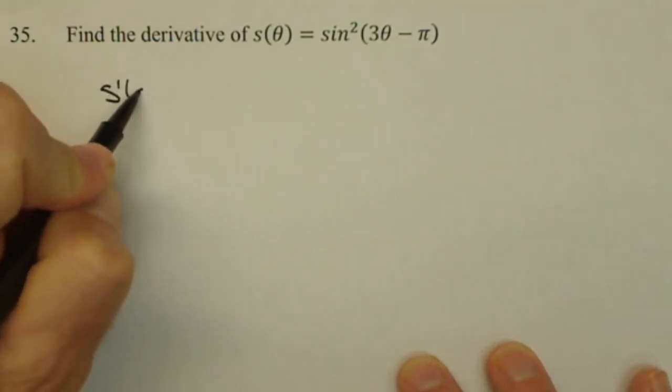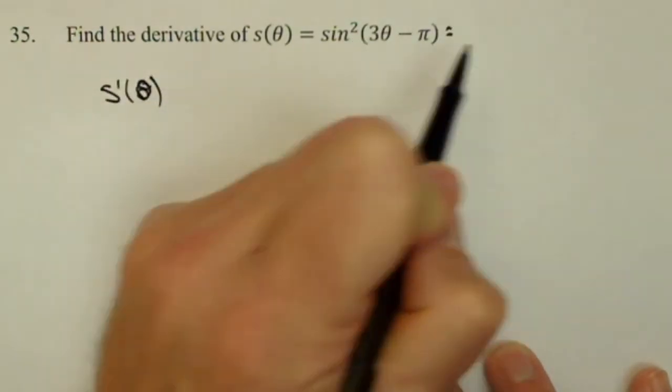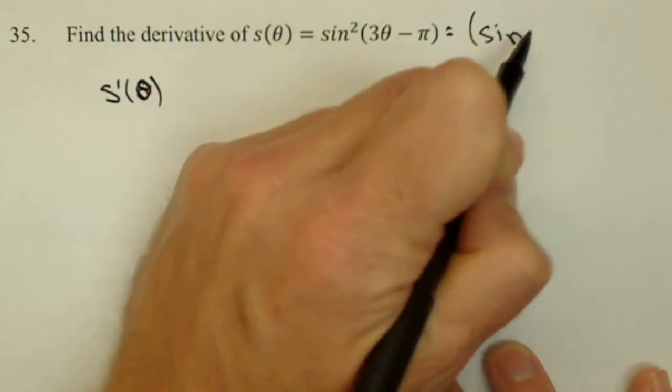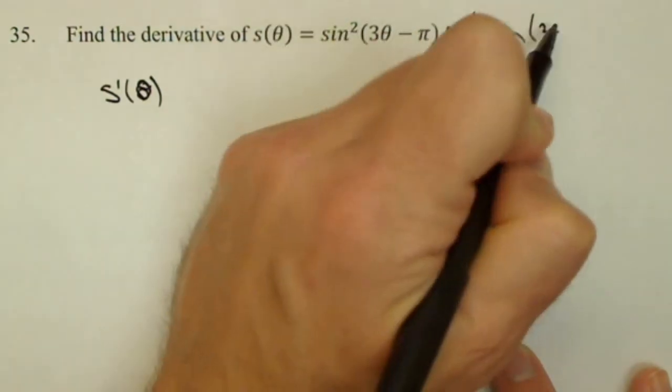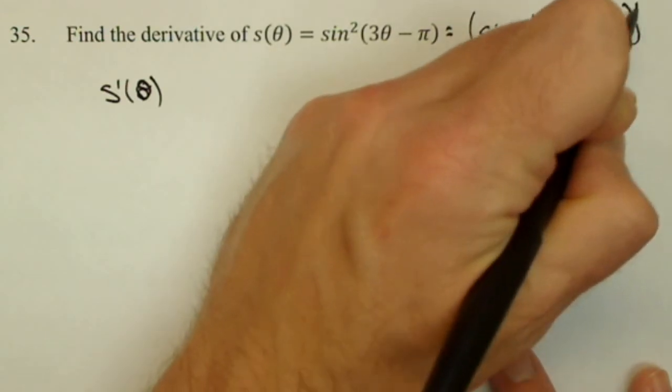So s prime of theta, now when the square is there this is basically the same as sine of 3 theta minus pi squared.